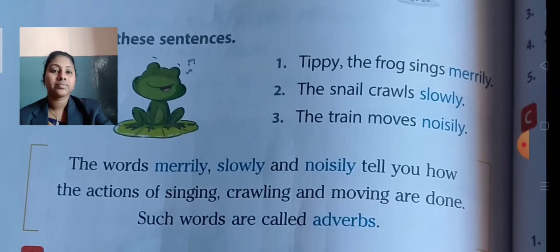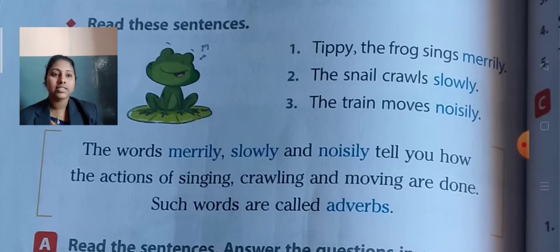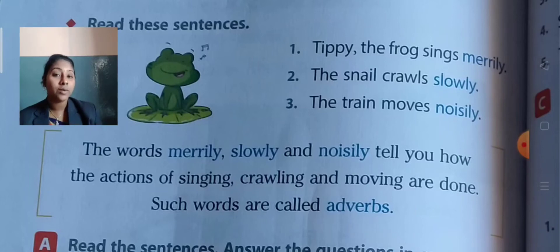Now comes the definition of adverbs. The words merrily, slowly, and noisily tell you how the actions of singing, crawling, and moving are done. Such words are called adverbs. These words tell you about how something is happening.